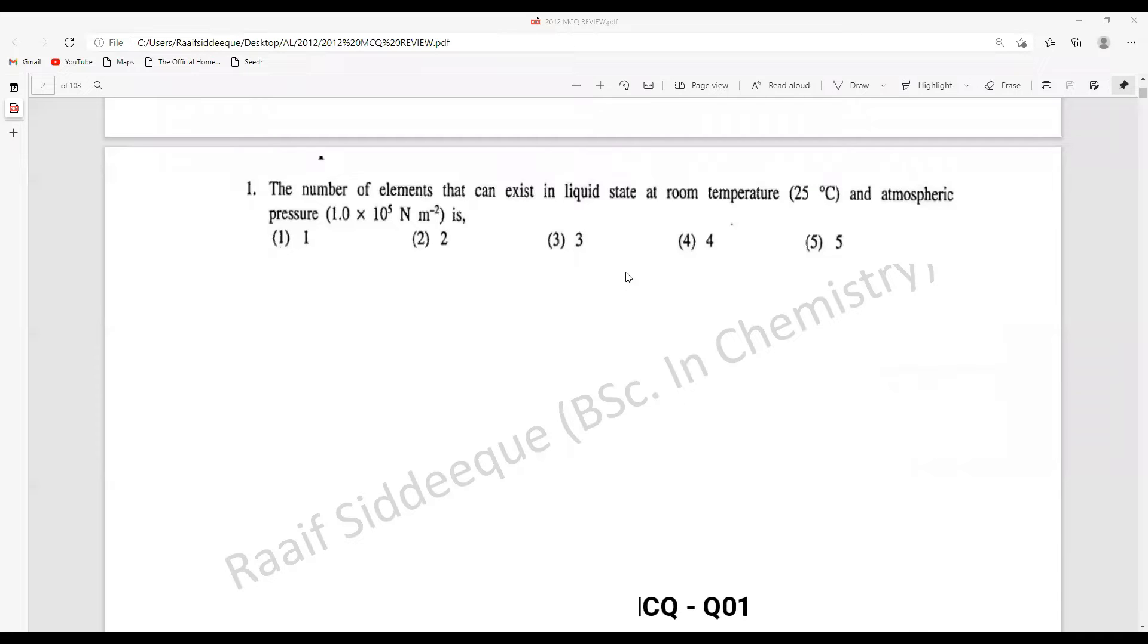So I will start with question number one: the number of elements that exist in liquid state at room temperature and atmospheric pressure. So this is a very straightforward question.